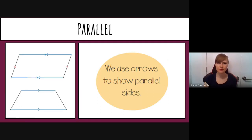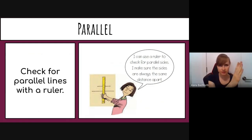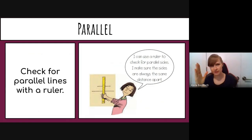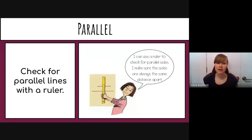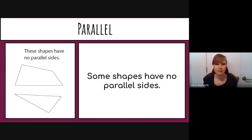If you're not sure whether lines are parallel, you can grab a ruler and measure the distance between two sides on one end of the shape, then move to the other end and check if the distance is the same. If it is, the sides are parallel.